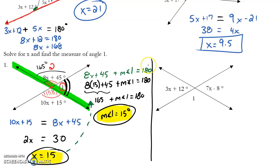I want you to take those ideas and try this second problem here. So you're going to press pause. Set up your equation. Solve for x. Find the measure of angle 1. When you're done, unpause to check your work.